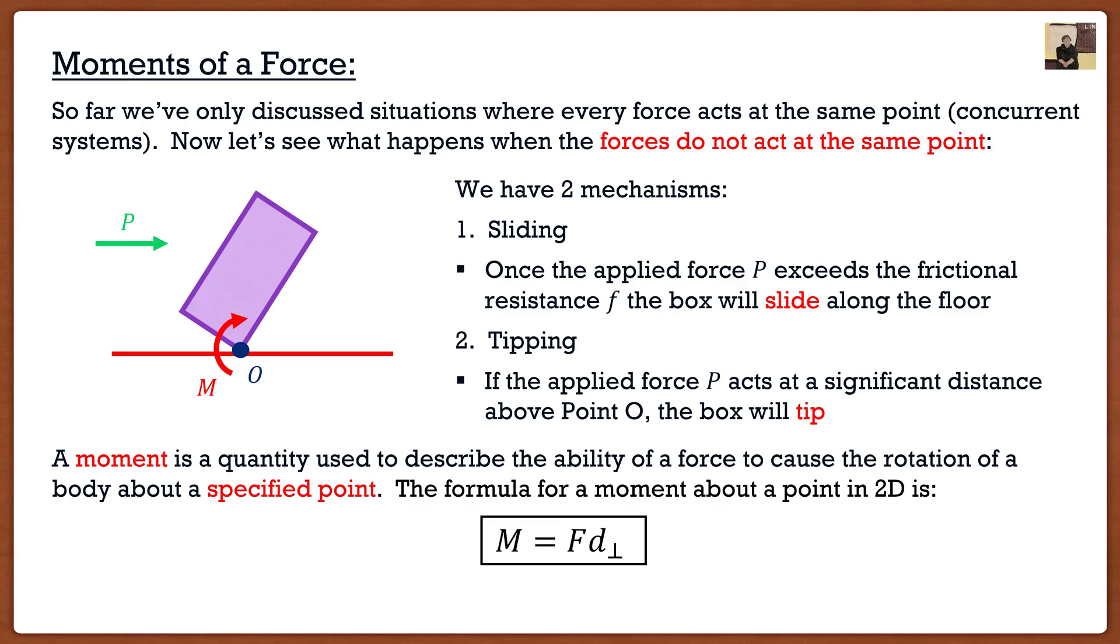A moment is a quantity used to describe the ability of a force to cause rotation of a body about a specified point. The first key here is that moments are not general. Some moments can be general, and we're going to discuss that in week five, but for the majority of the cases, moments are always specialized about a point. I wouldn't say the general moment is something. I would say the moment about this point is this, the moment about this point is this. So the moments depend on which point you want to take them about.